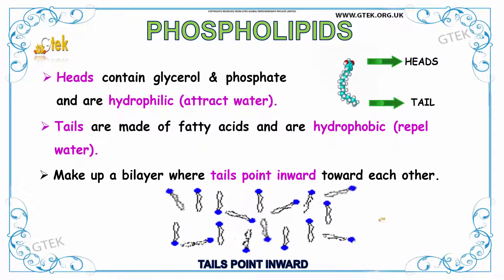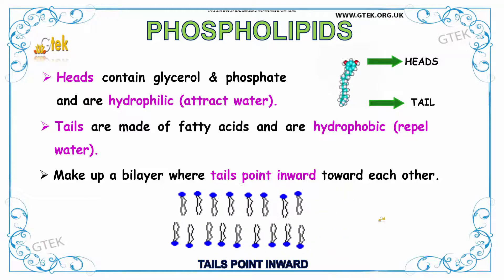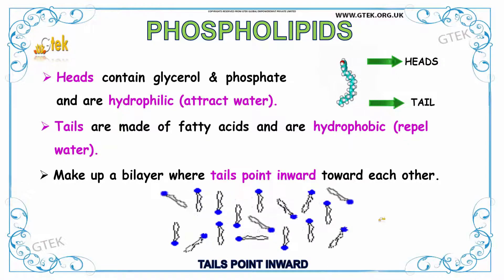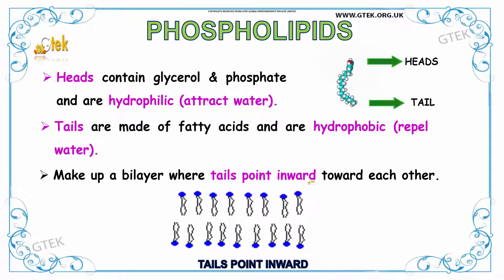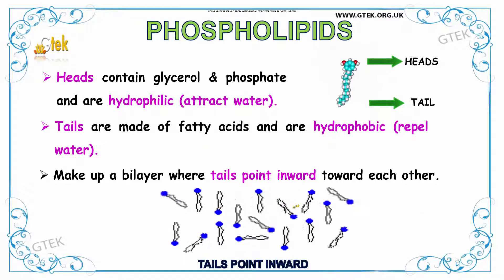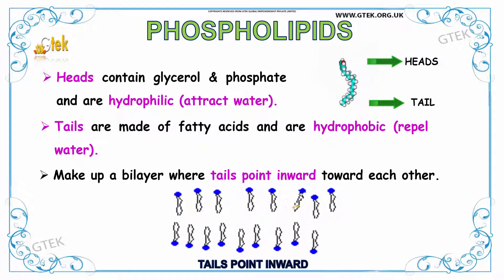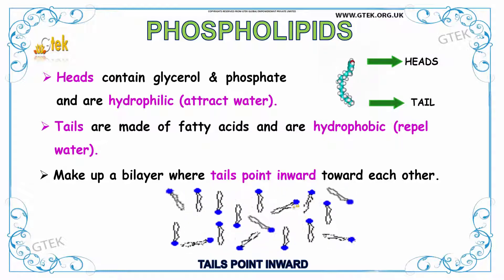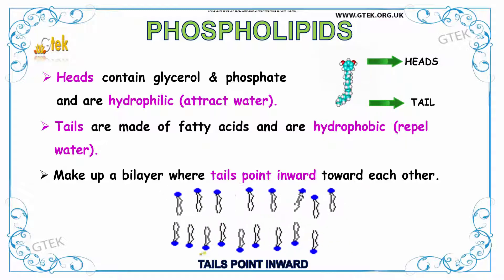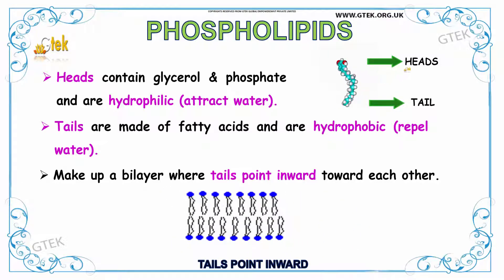Now we are going to see about phospholipids. Their heads contain glycerol and phosphate and are hydrophilic, meaning they attract water. Their tails are made up of fatty acids and are hydrophobic, meaning they repel water. They mainly make up a bilayer where the tails point inward toward each other.